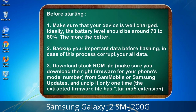Before starting: 1. Make sure that your device is well charged. Ideally, the battery level should be around 70 to 80% — the more the better. 2. Back up your important data before flashing, in case this process corrupts your data. 3. Download the stock ROM file and make sure you download the right firmware for your phone's model number.